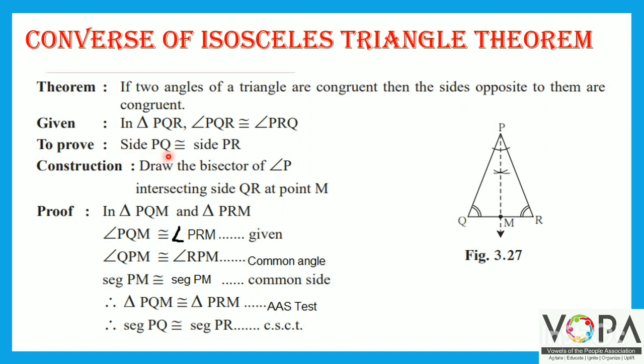To prove: side PQ is congruent to side PR. Construction: Draw the bisector of angle P intersecting side QR at point M.